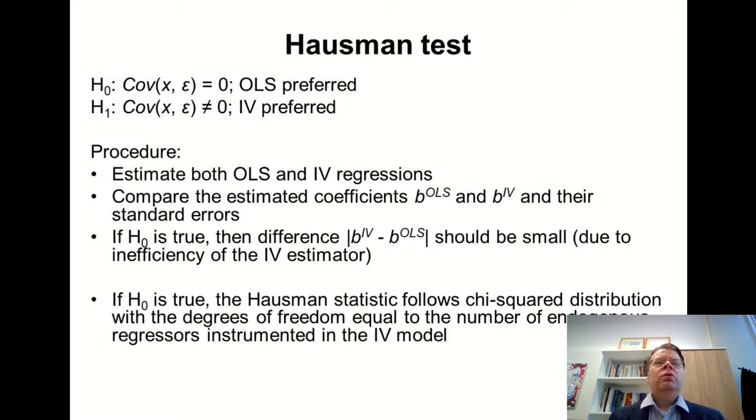The null hypothesis in the Hausman test, if we apply it in the context of instrumental variables, is that the OLS estimator is preferred. In other words, the null hypothesis we are testing is that the covariance of x and epsilon Cov(x, ε) = 0. The alternative hypothesis is that there is some correlation between x and the error term epsilon. In that case, the instrumental variable estimator would be preferred.